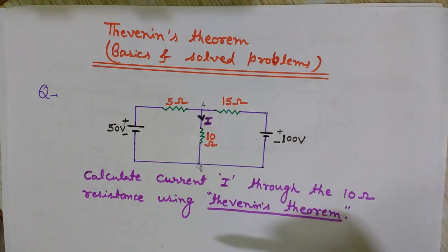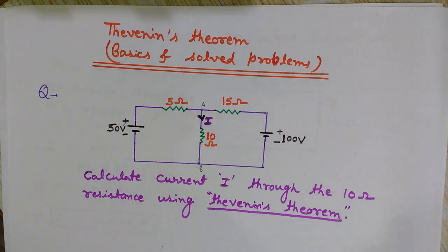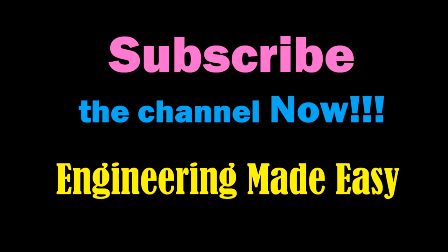This was the way of using Thevenin's theorem to calculate current in any particular branch. We can also use superposition theorem, Norton's theorem, KCL, or KVL, which we will see in next videos. This was about Thevenin's theorem — its basics — and we solved the problem and learned the concepts. Hope you liked this video; please like, share, and subscribe to Engineering Made Easy for more such videos.